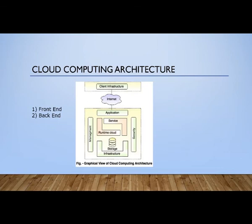From the cloud we get answers and replies — the things which we searched in the web browser. So in this architecture, the client infrastructure is the front end, and the cloud is the back end. We search from the front end and the answers and replies come from the back end. The cloud holds all the information and data.